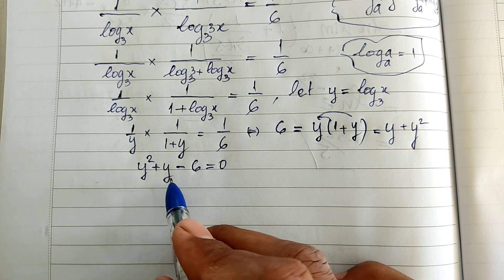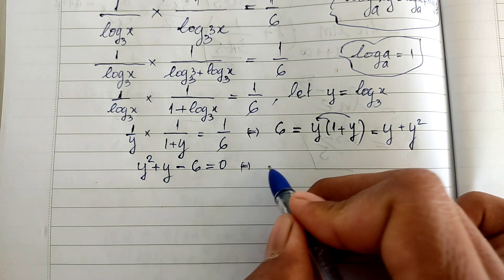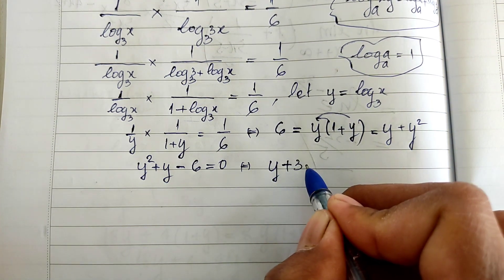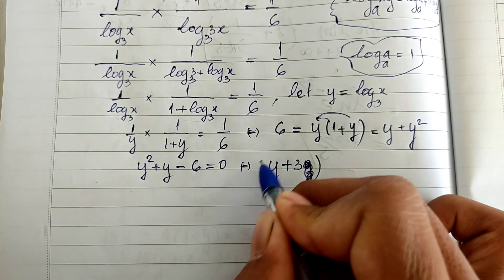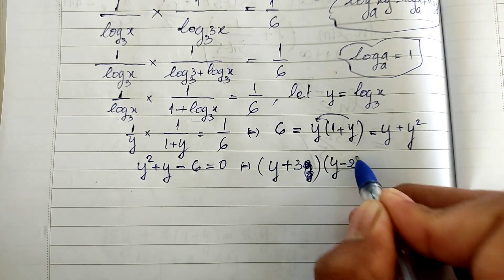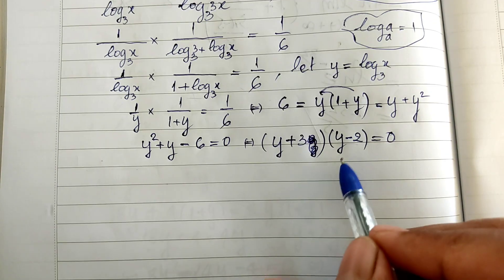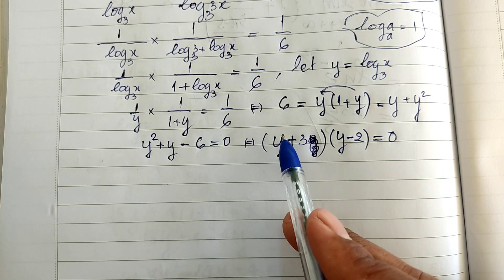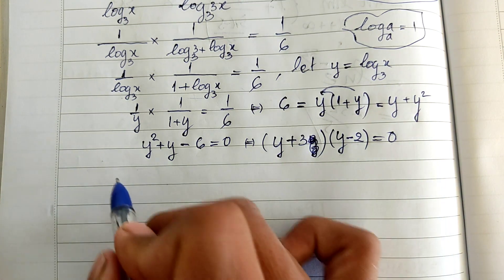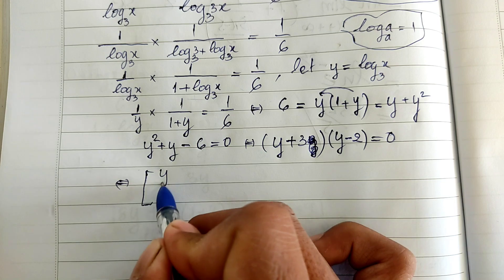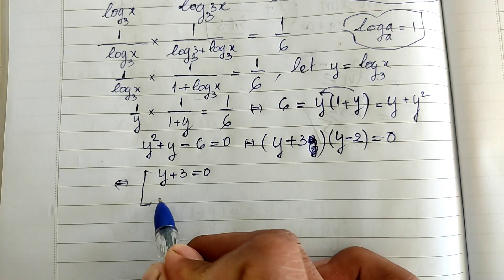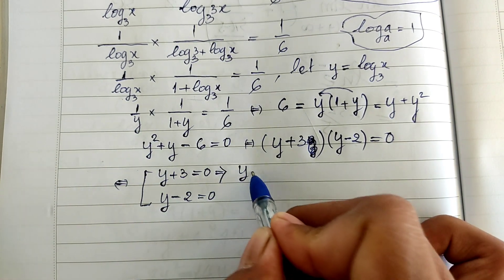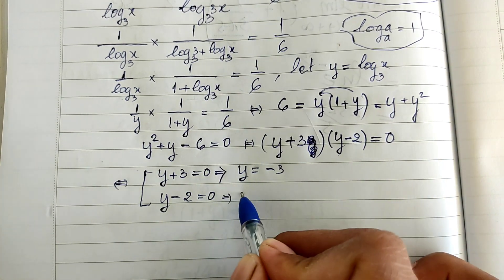We factor this quadratic into two factors: y plus 3 multiplied by y minus 2 equals 0. So we get y minus 2 equals 0, giving y equals 2, and y plus 3 equals 0, giving y equals negative 3.